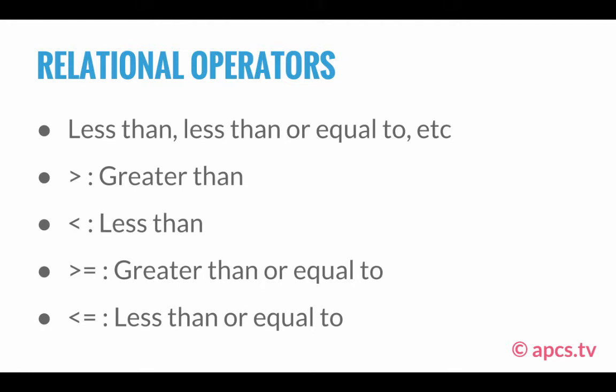We also have greater than or equal to. As you know, greater than or equal to is usually the greater than symbol with a line under it, but since we can't put that into a Java program, Java has us write a greater than sign followed by an equal sign. Similarly, for less than or equal to, you write a less than sign and then place the equal sign right after it.